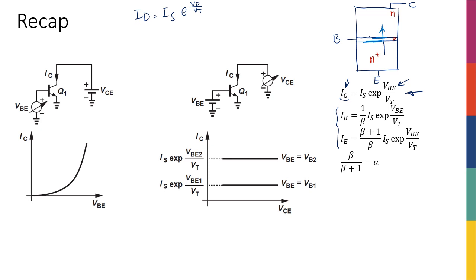Since all of these carriers originate from the emitter, the emitter current is the sum of collector current plus base current — which KCL also confirms. When a transistor is given to you, two parameters should be provided: IS, the reverse saturation current of the base-emitter diode, which sets the scale of the collector current expression, and beta, which tells you the doping ratio of emitter over base and typically ranges from 50 to 200.